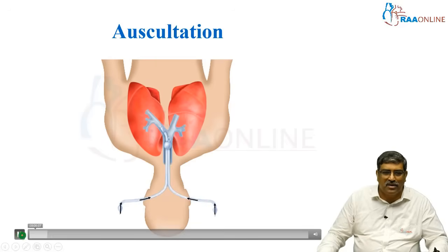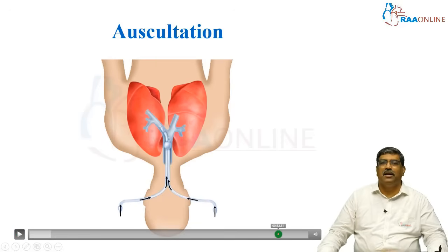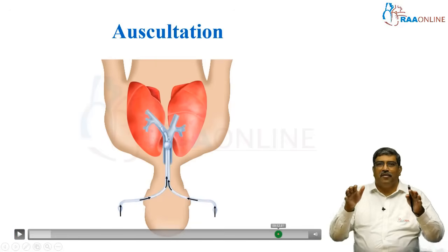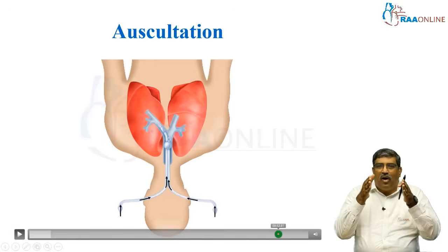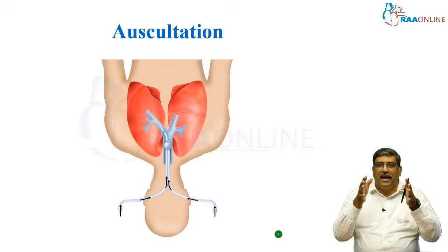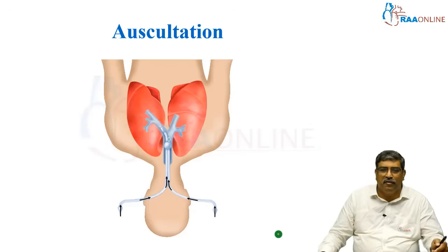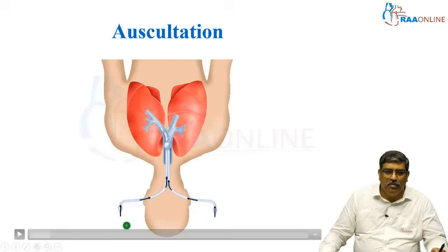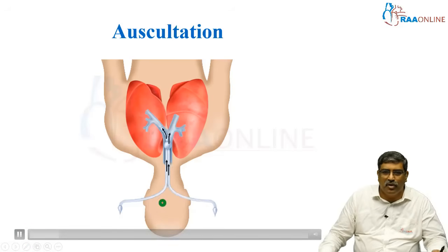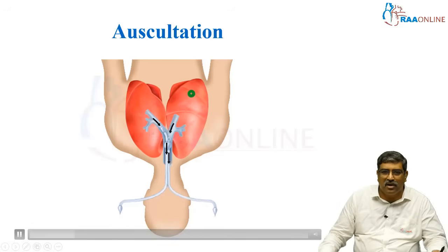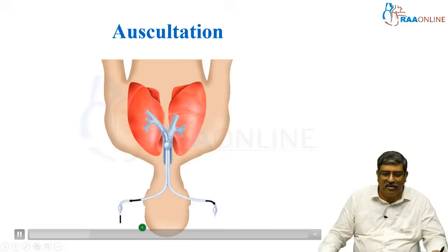Coming to auscultation — whether auscultation can help in proper prediction of double lumen tube placement. When the double lumen tube is placed and you are ventilating both sides, on auscultation both sides air entry will be heard.